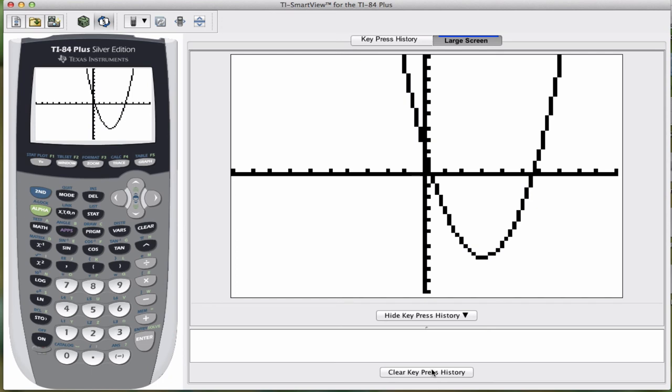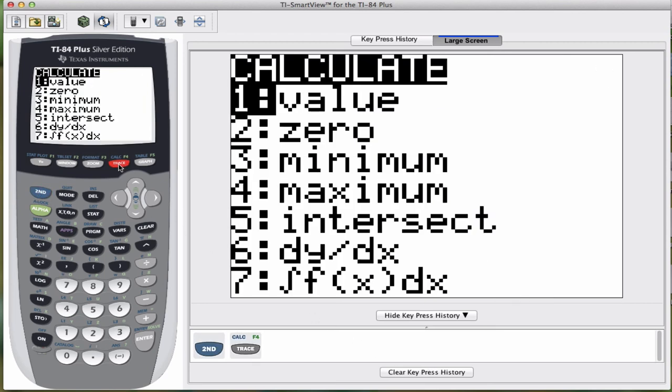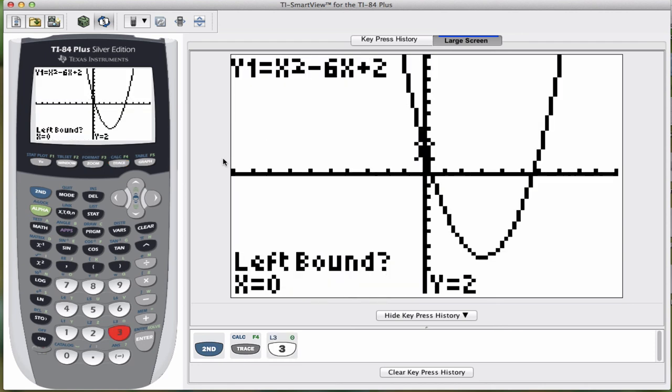So I'm going to go ahead and press second, trace. And it brings up this calculate menu. And these are all things that we're going to be using this year. So we said that we think that there is a minimum. So we're going to choose option 3, which is minimum. And it's going to ask me left bound. And what that means is I can see that the minimum point is right here. So it's asking me, is this a point that is to the left of the minimum? And it is. So I'm going to press enter. And we don't need to be really exact. You could have chosen any point to the left of the minimum, and that's fine.